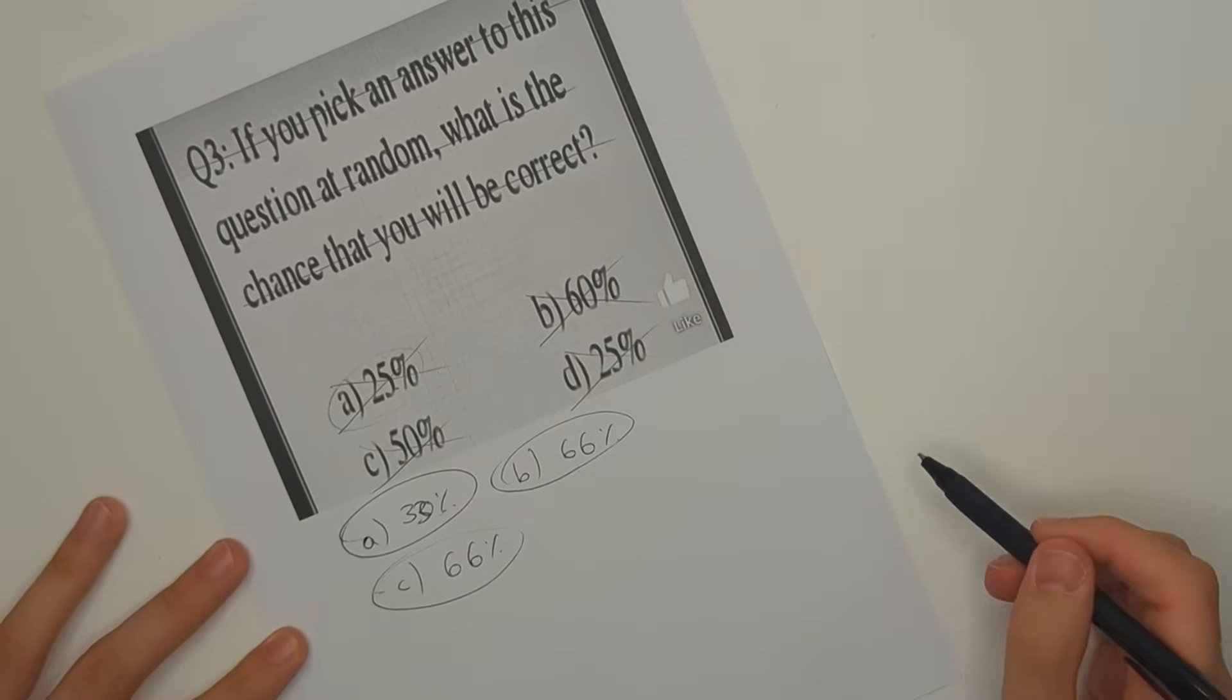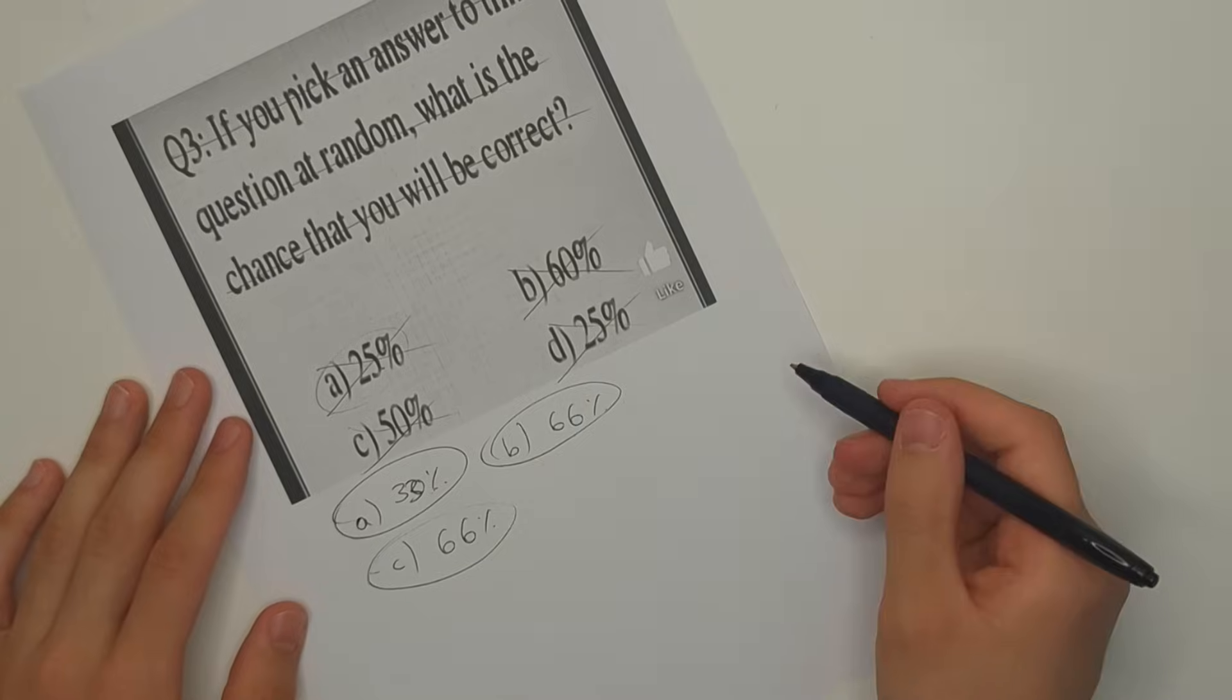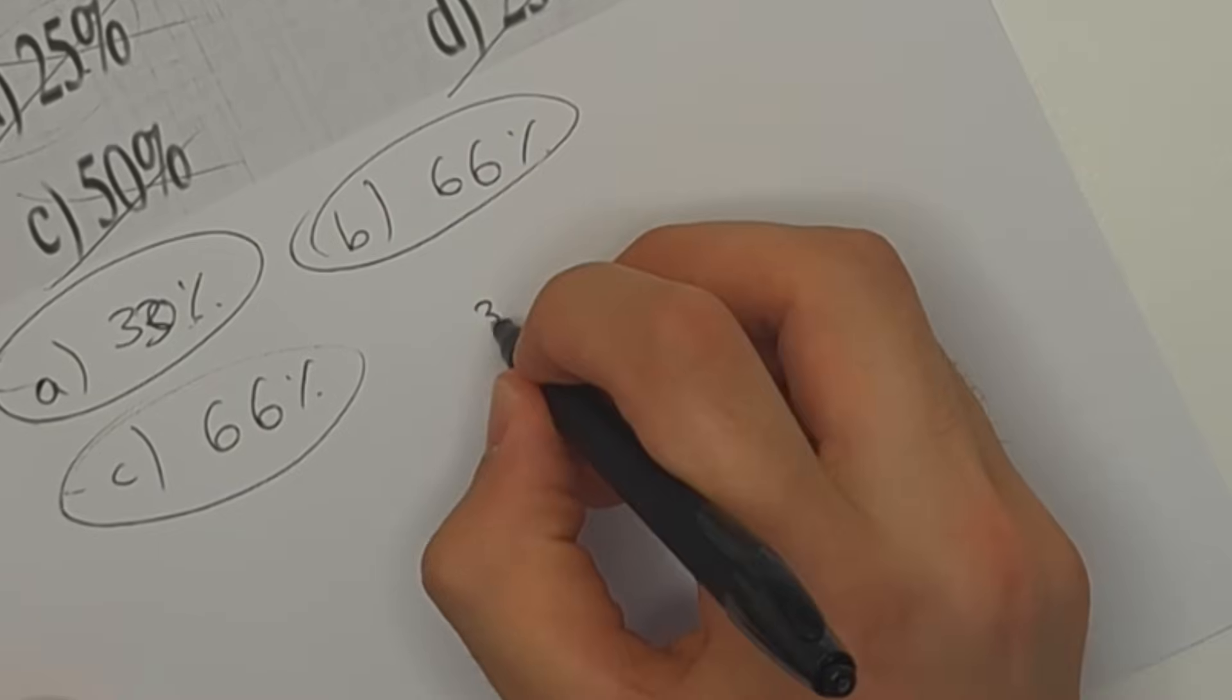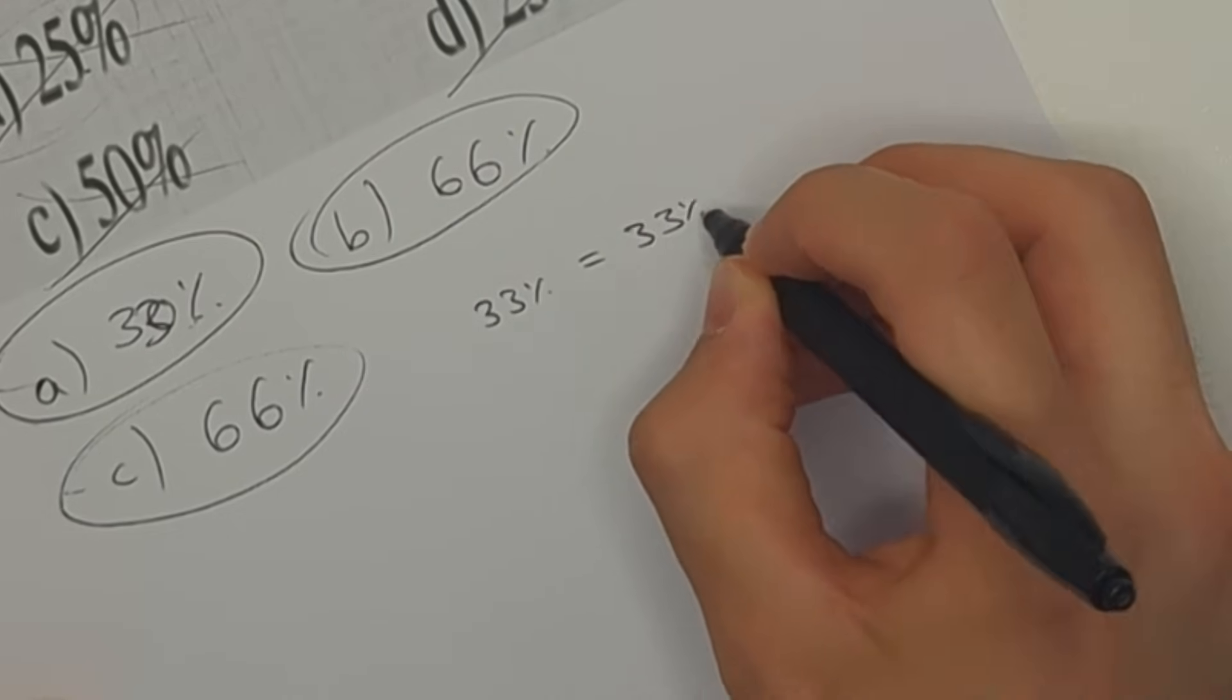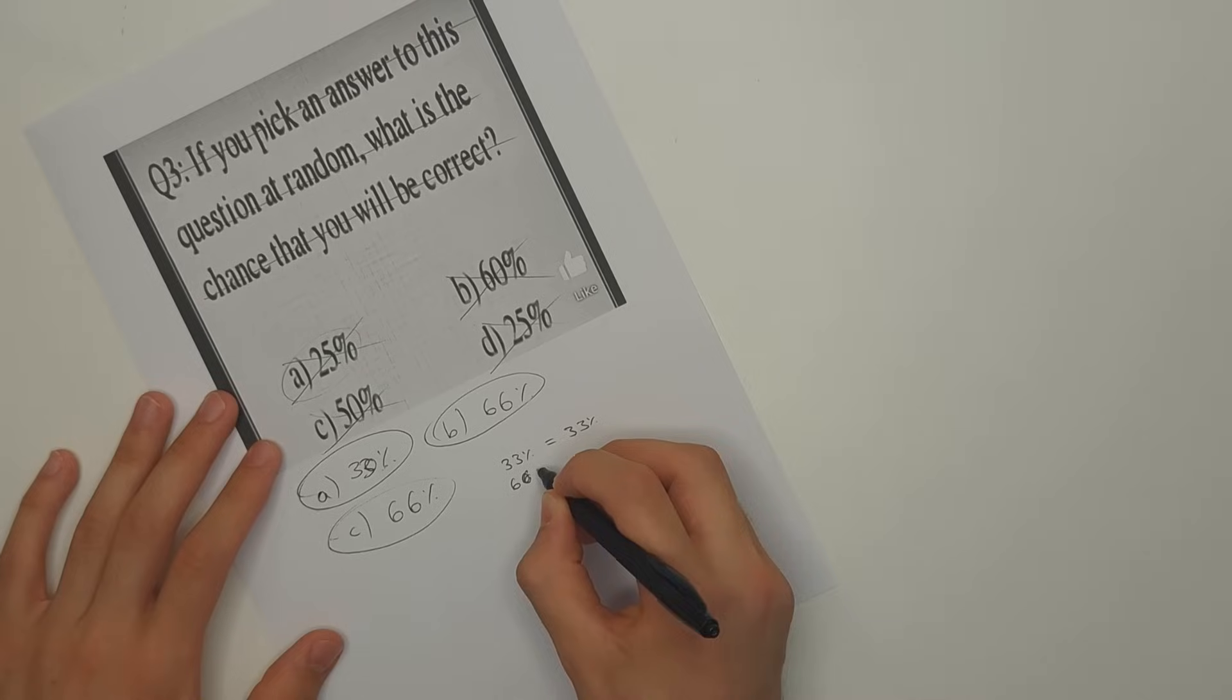And this one would also be correct because there's a 66% chance that you'll pick 66%. So in this case because all of the options have the same probability of picking it as the probability itself, it's all correct.